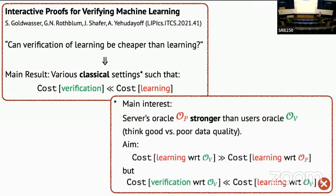In more detail, one particular setting they considered that is of interest to us here is where the service oracle — which we call OP for the prover — was stronger in some sense than the user's oracle — we call OV for the verifier. This can be thought of as good versus bad data quality, for example. The aim was to find some learning problem or set of learning problems where the cost of learning with respect to the user's oracle is more expensive than with respect to the service oracle, however the cost of verifying with respect to the user's oracle is cheaper.